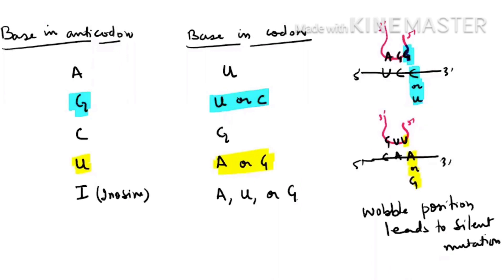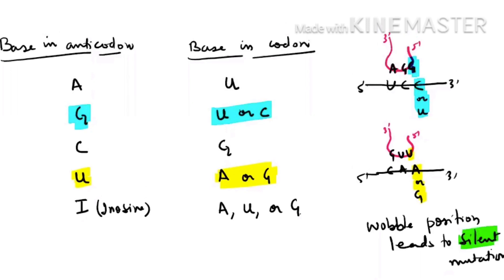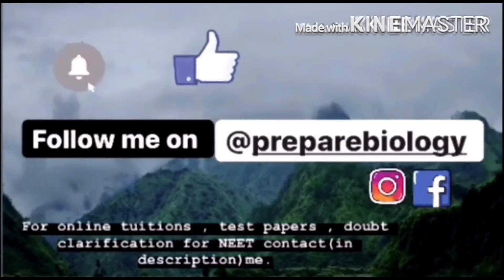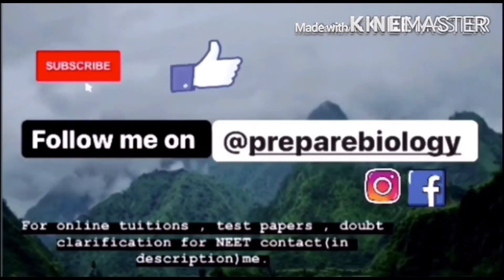I hope this topic has helped you understand: codons are present on messenger RNA and anticodons are present on transfer RNA. The wobble position helps us save the number of transfer RNAs — we need less than 61 transfer RNAs to read all 61 codons and code for 20 amino acids. If you have any doubts, please message me. Thanks for watching — if you liked it, please give it a thumbs up and subscribe to my YouTube channel.